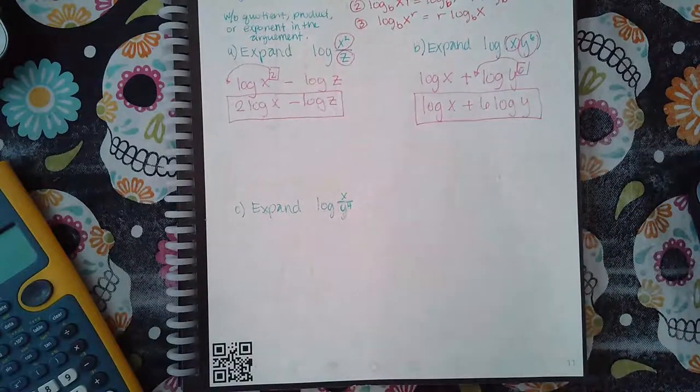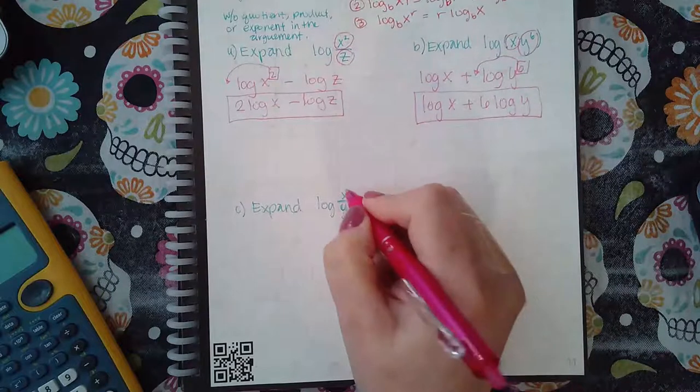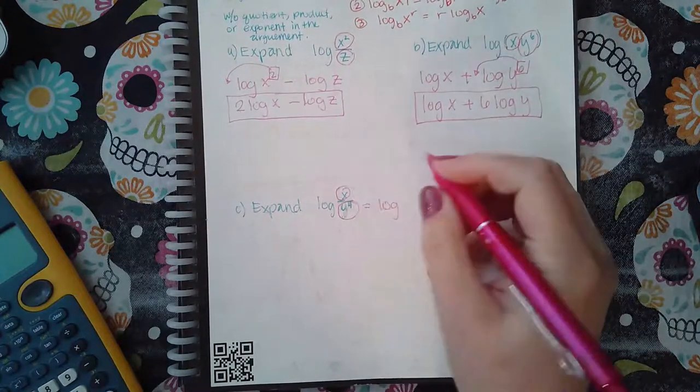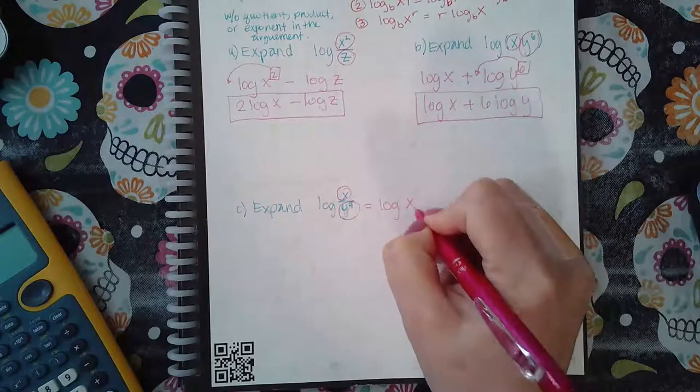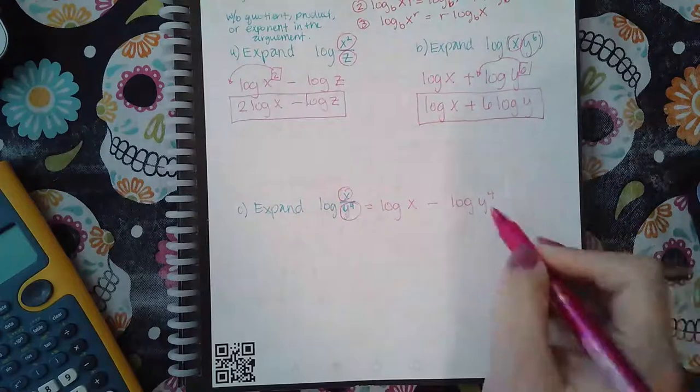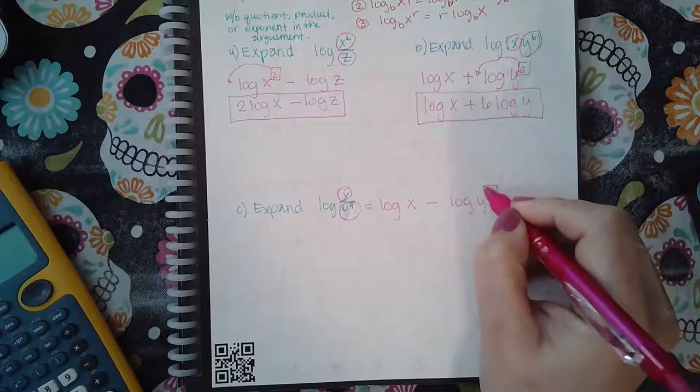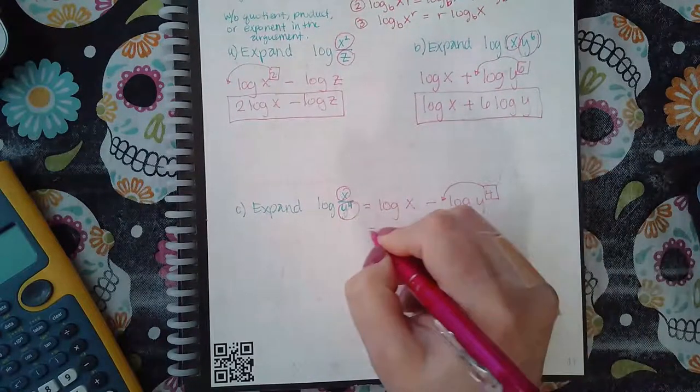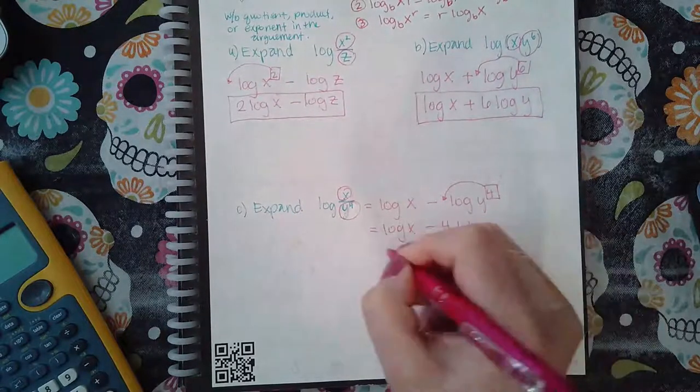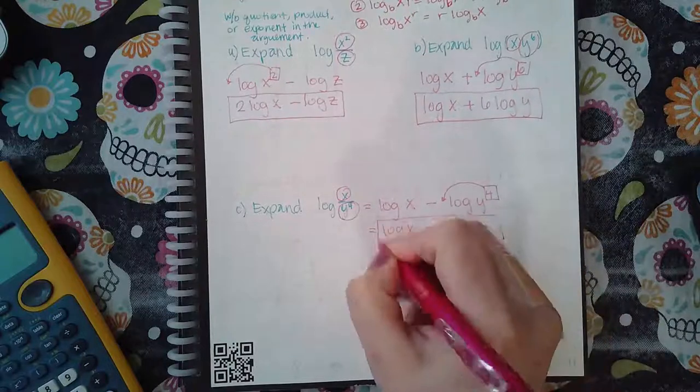Now the last one, I have a quotient again, so I do need to do step one—the top and then the bottom. So this becomes log of x minus log of y to the fourth. And I do have an exponent here which does need to come down, so then this becomes log of x minus 4 log of y, and we are finished.